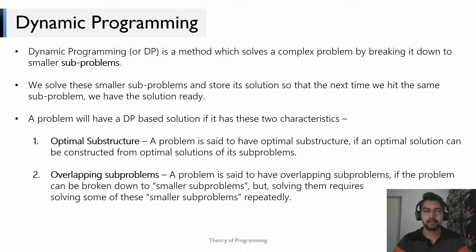The original problem must have two characteristics for a DP-based solution. The first is optimal substructure — we break down the complex problem into smaller sub-problems and solve them, but the optimal solutions to the sub-problems should be usable to construct the optimal solution of the original problem. This is called the optimal substructure property.